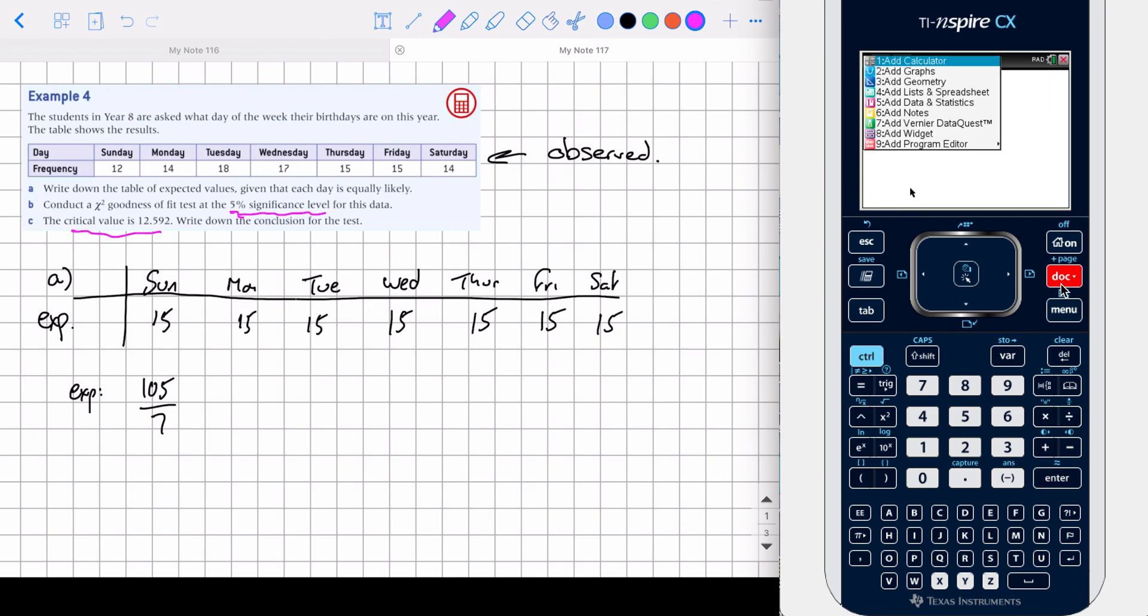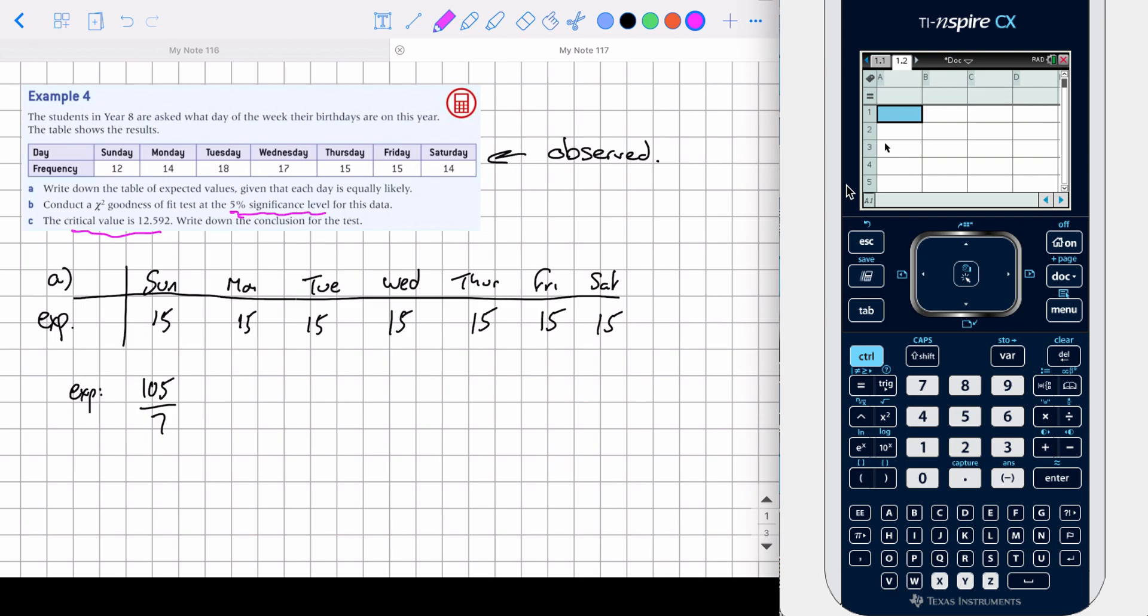So what we're going to have to do is we're going to have to type this into a list and spreadsheet. Our observed data can go into the first column: 17, 15, 15, and 14. If you want to label your column, you can. That's good practice to get into. 15, but for this, I'm just going to do the processing.